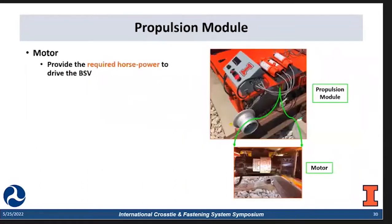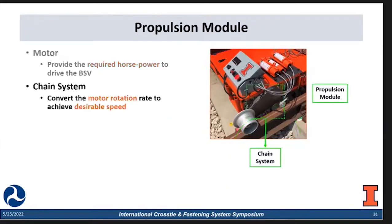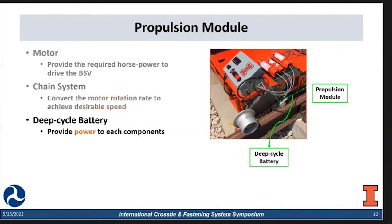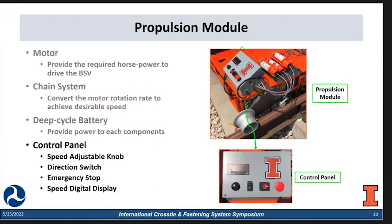The last module is the propulsion module. We have the motor which provides horsepower, and the chain system which converts the motor rotation rate to achieve the desired speed. We have the deep cycle battery which provides power to each component. Lastly, we have a control panel with several buttons: one speed adjustment knob, one direction switch, one stop button, and one speed display. We also enable remote control of the whole system so we can remotely start and stop the platform from a safety perspective.